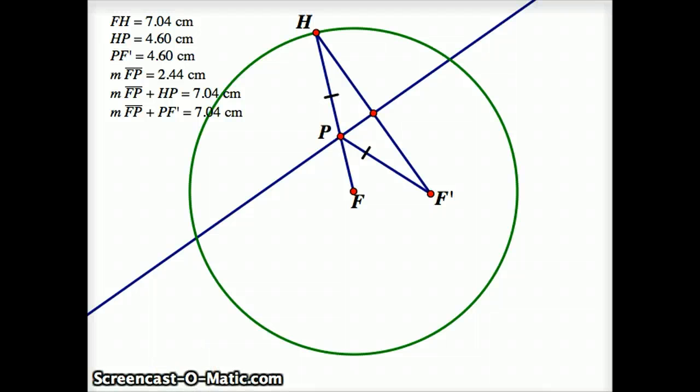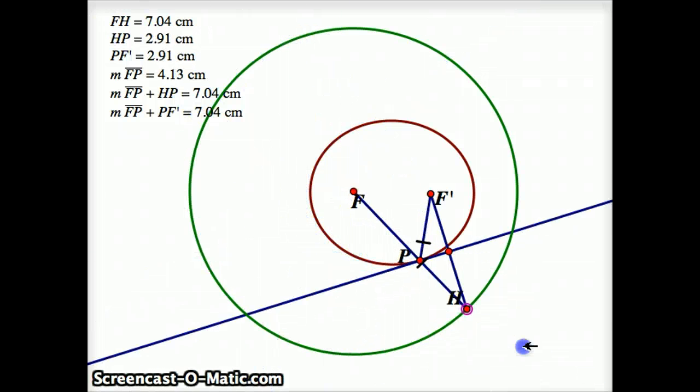Now, if I take all the different points that P can take on, it's going to make an ellipse.